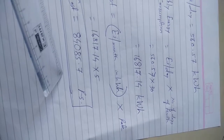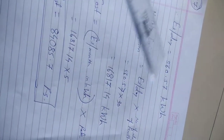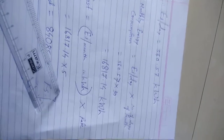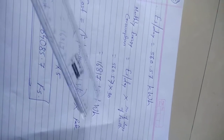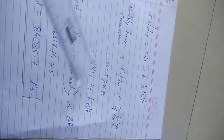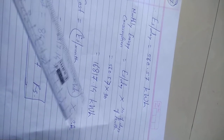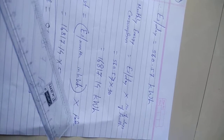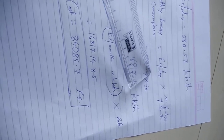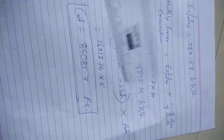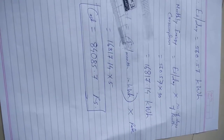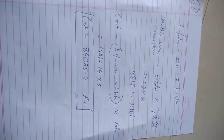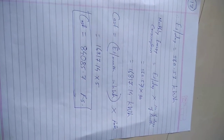The daily energy consumption is 560.57 kWh. For 30 days, total monthly energy consumption = 560.57 × 30 = 16,817.14 kilowatt-hours. The rate is ₹5 per kilowatt-hour, so the monthly electricity cost = 16,817.14 × 5 = ₹84,085.70.